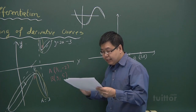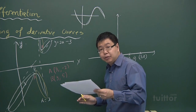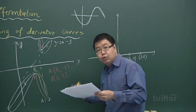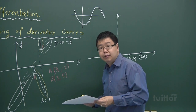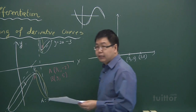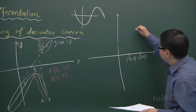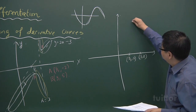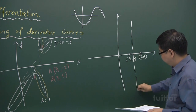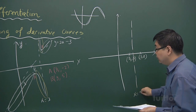Point number four says that if f(x) has a vertical asymptote at x equals a, then f'(x) will also have a vertical asymptote at the same point. So since the vertical asymptote is x equals 2, we should expect a vertical asymptote there in the derivative graph as well.